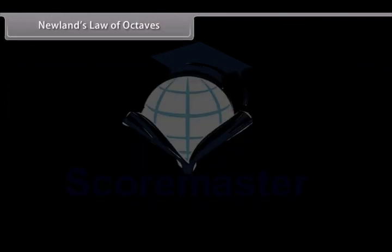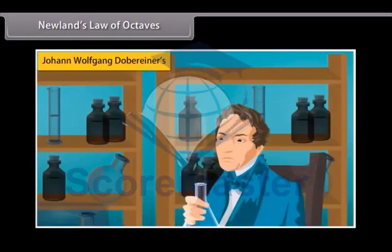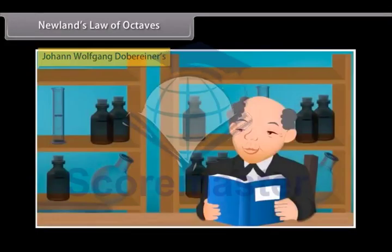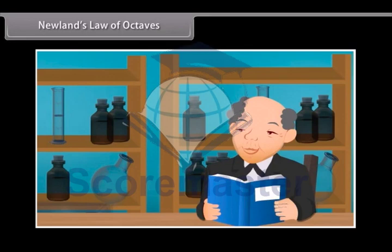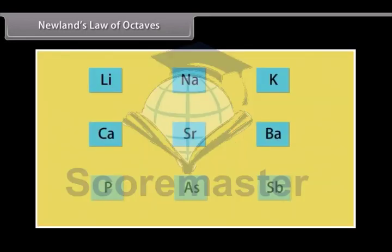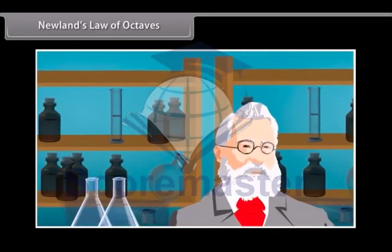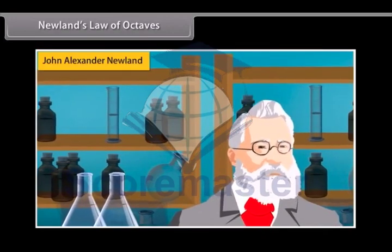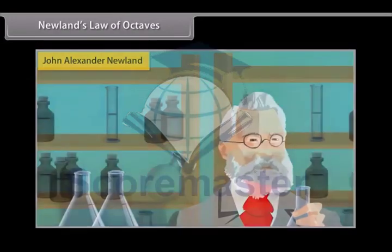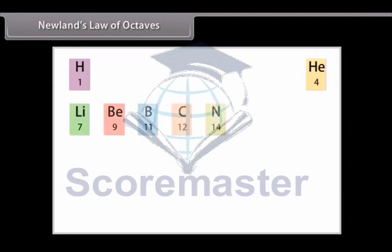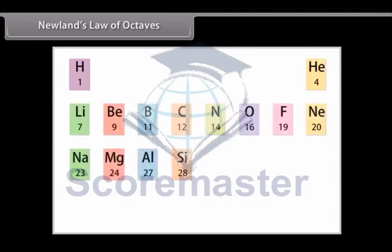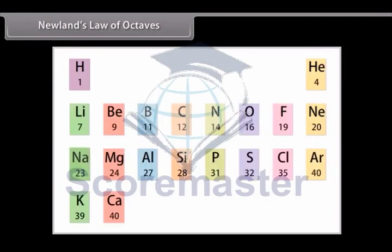Newlands Law of Octaves. Dobereiner's research simultaneously encouraged other scientists to start classifying elements. The triads were not useful as they could classify only three elements at a time. In 1864, John Alexander Newlands, an English chemist, discovered that when elements are arranged in the increasing order of their atomic masses, atomic weight, every eighth element had properties similar to the first element.